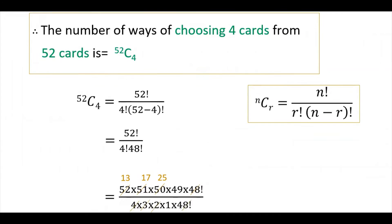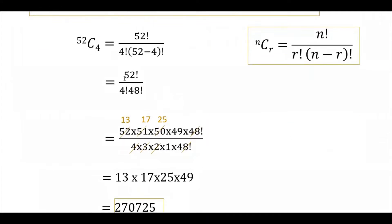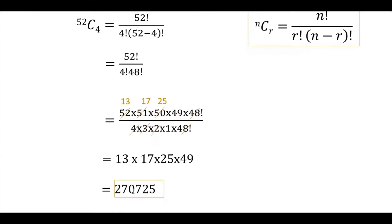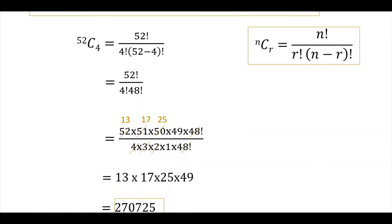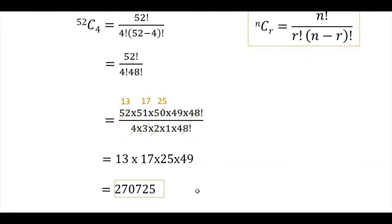52 factorial is written as 52 into 51 into 50 into 49 into 48 factorial. Since 48 factorial appears in the denominator, we cancel it. Then 4 factorial is 4 into 3 into 2 into 1. Calculating this value gives 2,70,725. This is the total number of ways of choosing 4 cards from 52 cards.